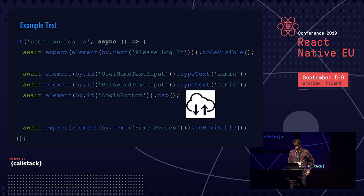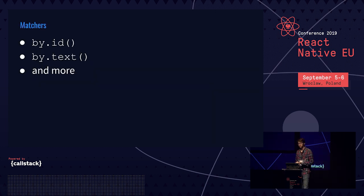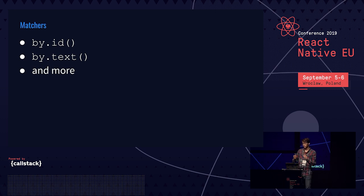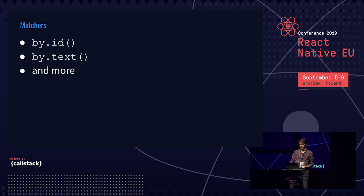In order to control the app, Detox needs to find elements using matchers. byId is a matcher that finds elements by the testID. byText scans the screen and looks for elements with given text. These two will cover more than 90% of your needs.